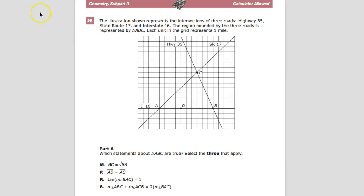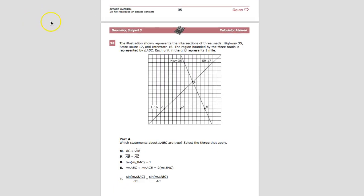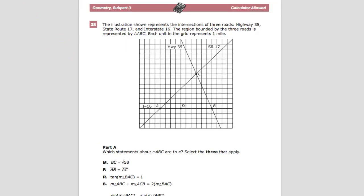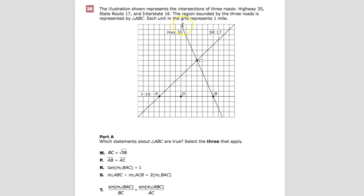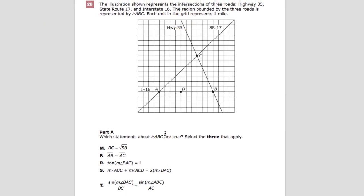This is question number 28 on the Geometry 10 Ready Practice Test. It's one of those multiple part questions that are starting to warm the hearts of the test makers. The illustration represents intersections of highways. We want to know in part A which statements about triangle ABC are true. Select three that apply.